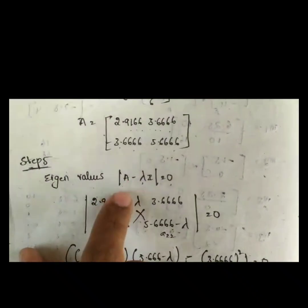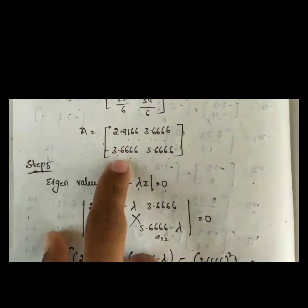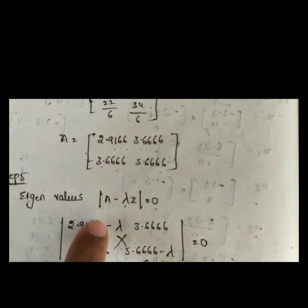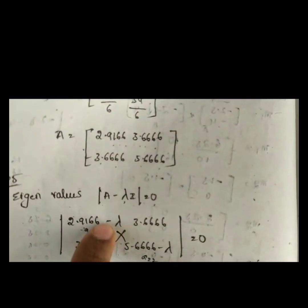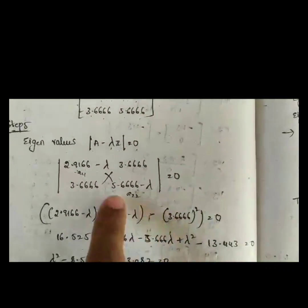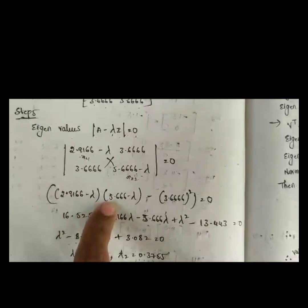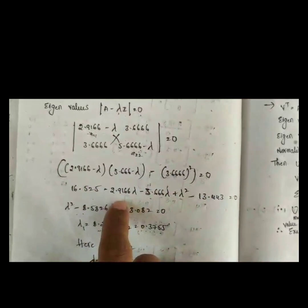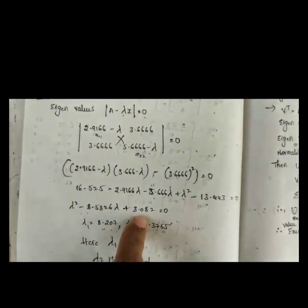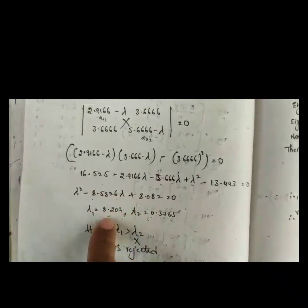Step five is finding eigenvalues using the formula: determinant of (A minus lambda·I) equals zero. We write matrix A and subtract lambda from the diagonal elements a₁₁ and a₂₂. Cross-multiplying gives: (2.9166 − lambda)(5.416 − lambda) minus (3.416)² equals zero, which yields a degree-2 polynomial equation.